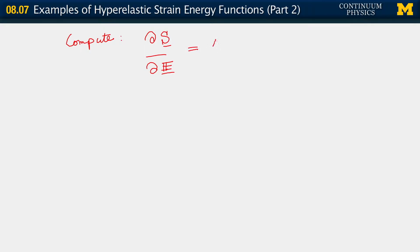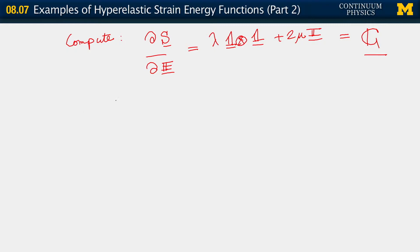In this case we would get lambda times one tensor one. I'll write it in direct notation and also in coordinate notation, plus two mu multiplying another tensor which I'm going to write as I. This is what we will denote as big C — the material elasticity tensor.